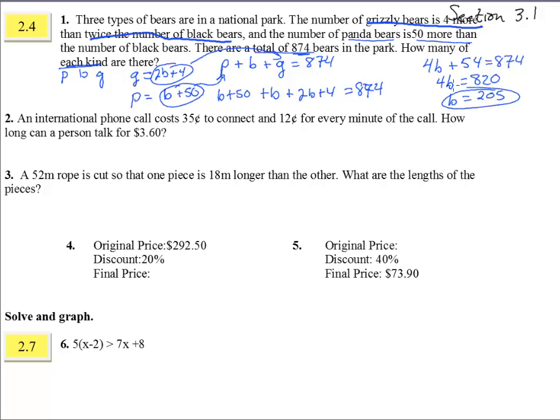So this tells us the number of black bears. Good, now let's look at what happens to the pandas. The black bears, we have 205 here. So the pandas says the number of black bears plus 50. So 205 plus 50, that means 255 for the pandas. 205 times 2 is 410, plus 4 is 414 for the grizzly bears. And does that really make sense? Will you add these all up and get 874? Indeed, you will.